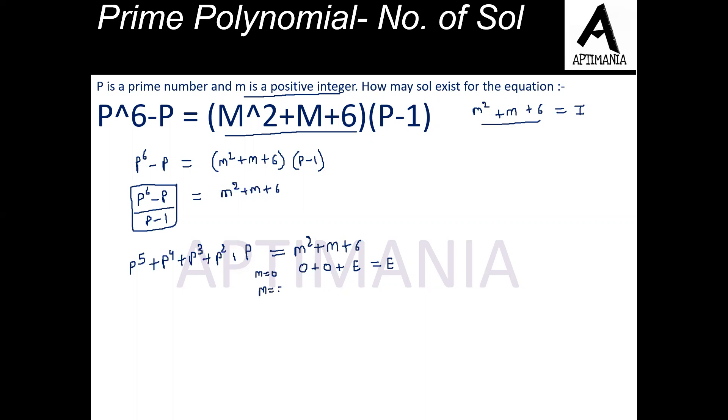And when M is even, then even squared is even. Even number is even and 6 is again even. So the sum of 3 even numbers is again even. So no matter what is the value of M, this value is always even. This M² + M + 6 is always even.